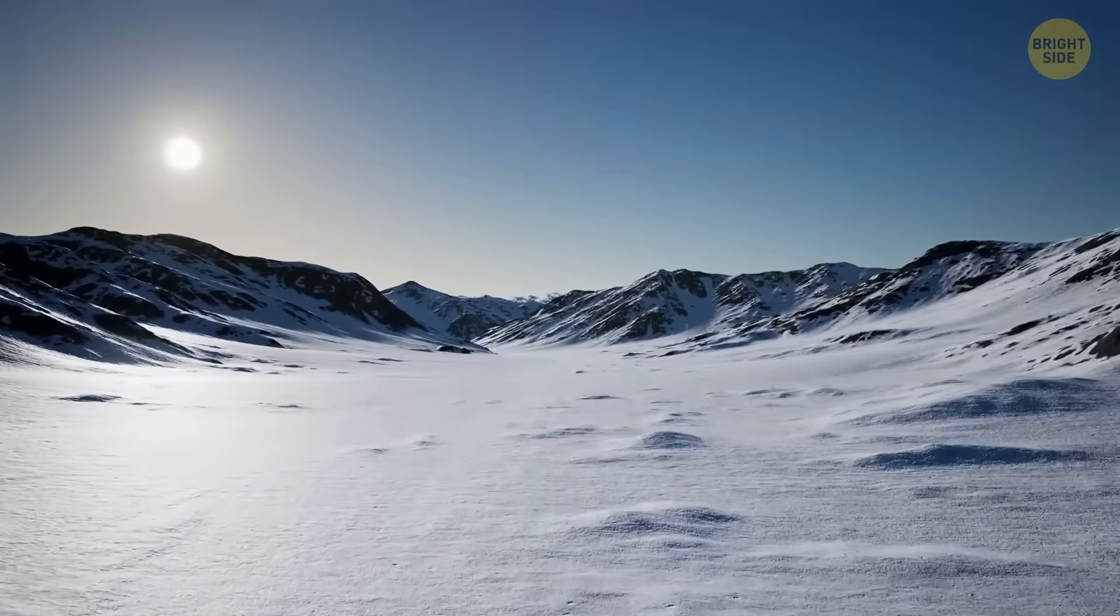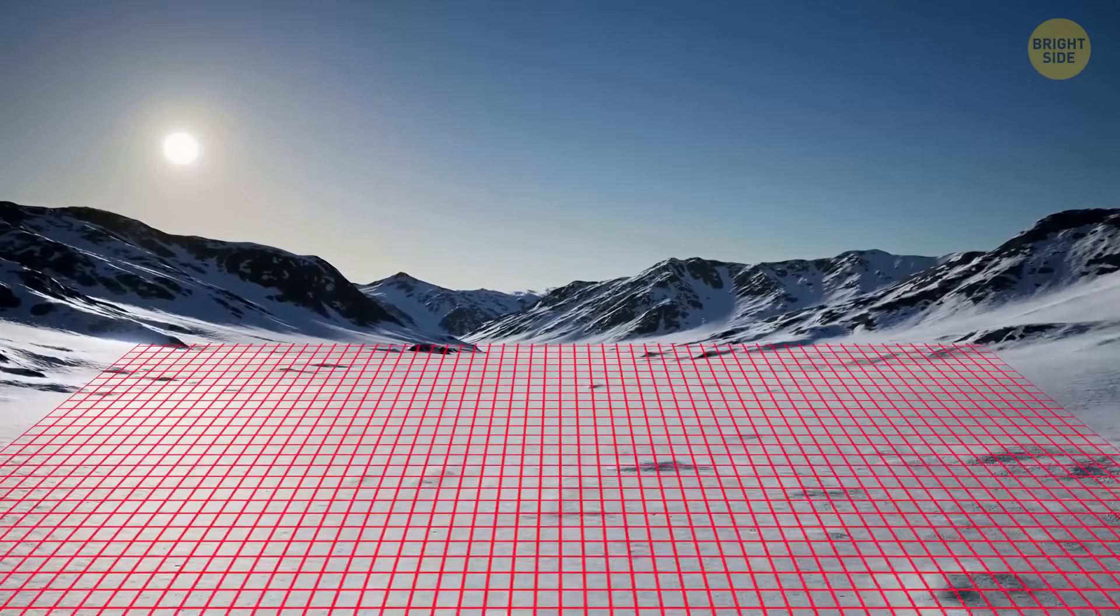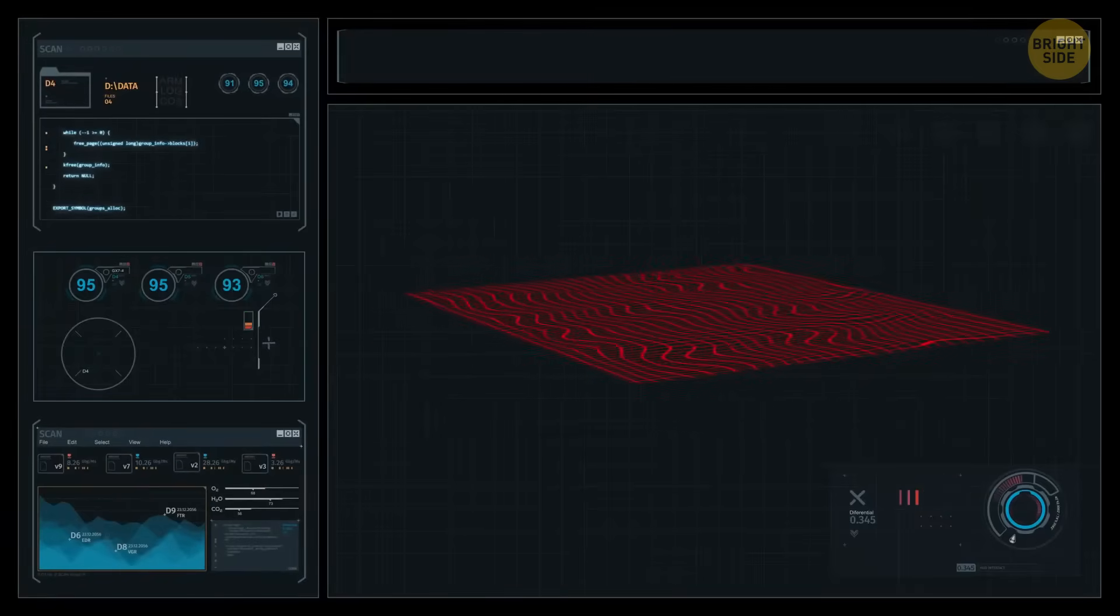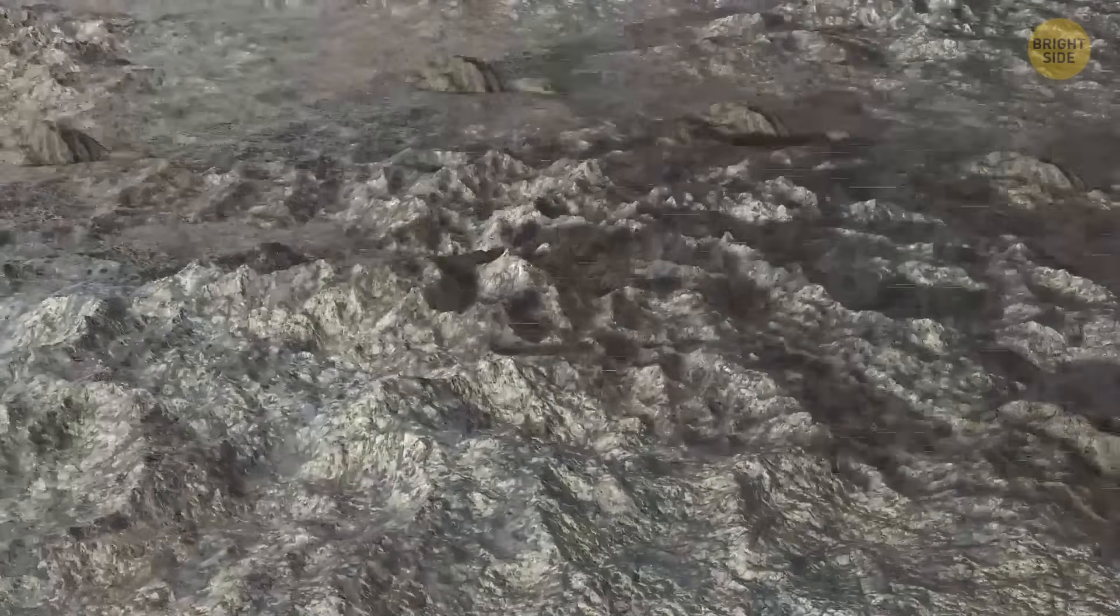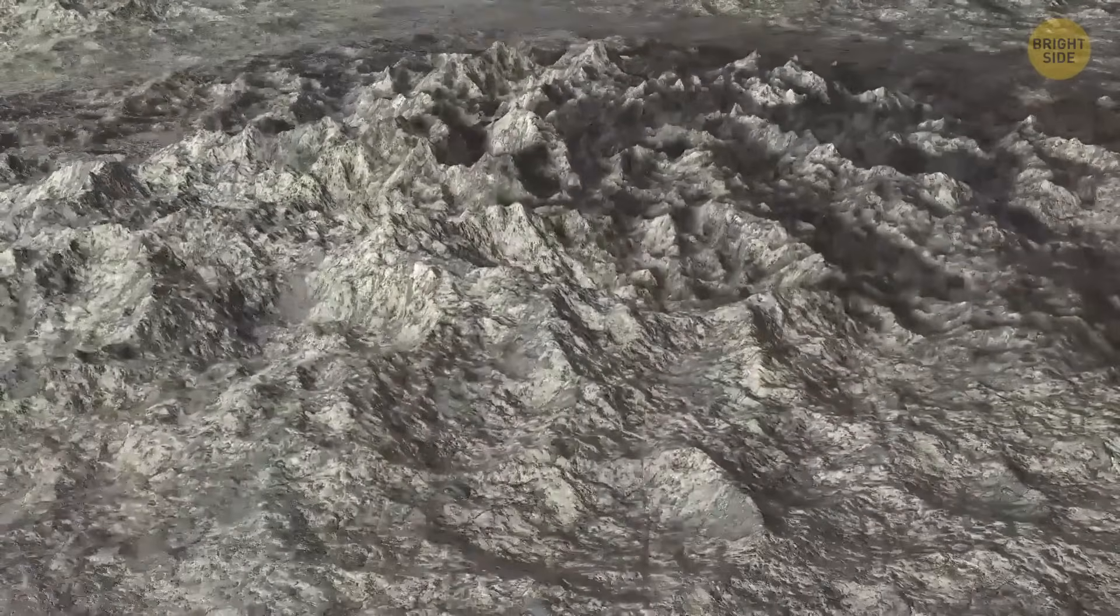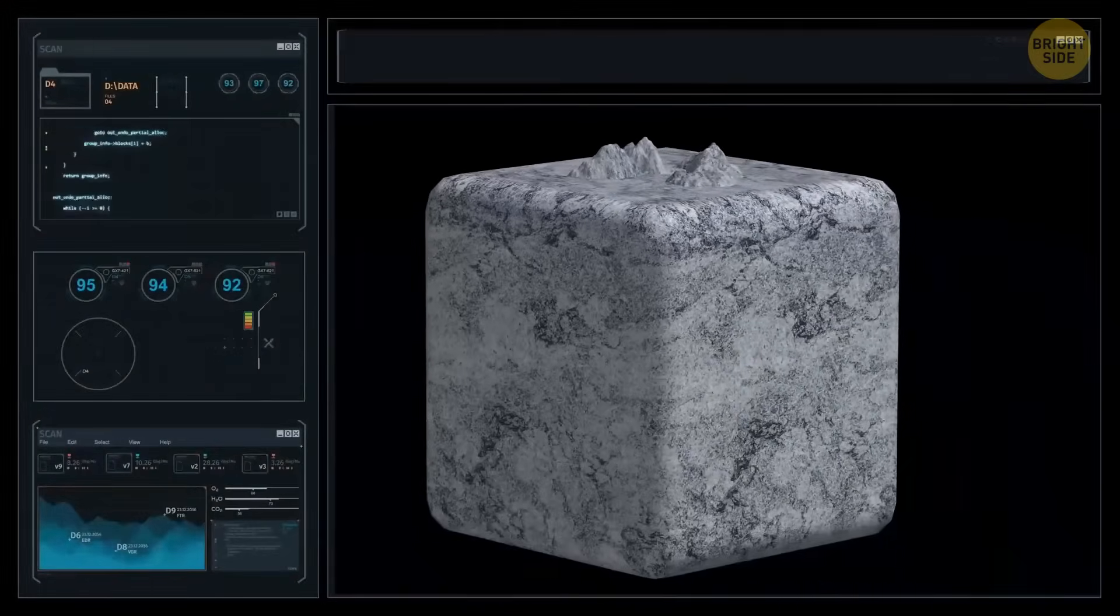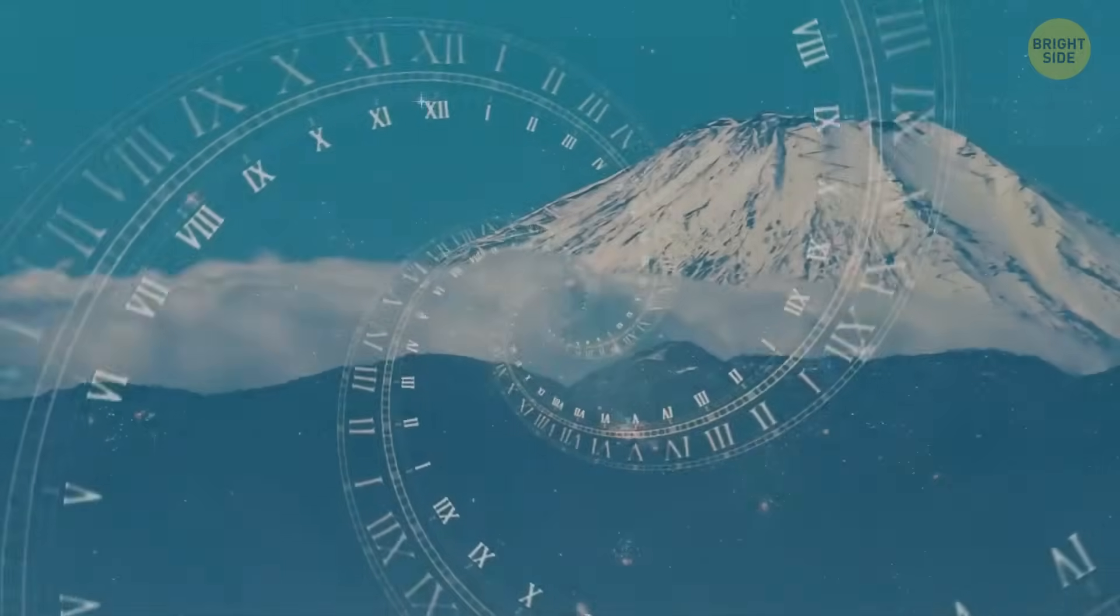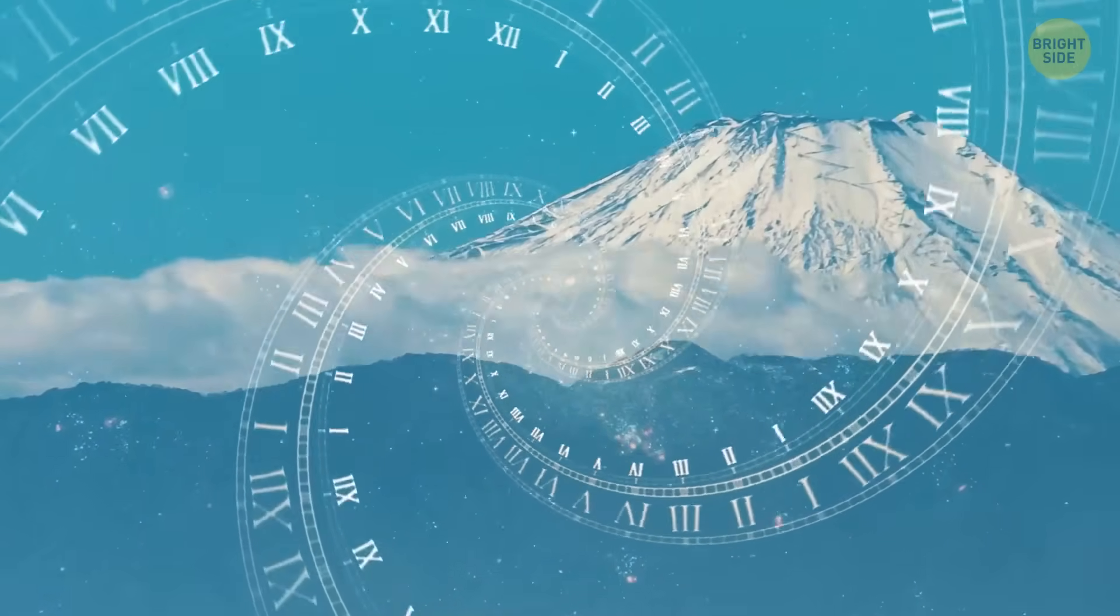In areas where the ice is especially thick and doesn't move much, like in East Antarctica, it has actually worked the other way around. It became like a super-thick blanket that protects the land. Normally, things like wind or rain slowly wear away the ground over time, changing its shape. But since we have this protective ice blanket, it prevents these natural processes from reaching the stuff underneath. So, the ground stayed almost the same for millions of years, like it's been frozen in time.